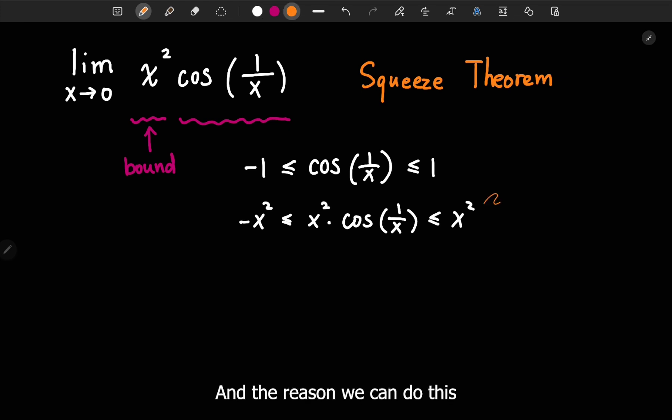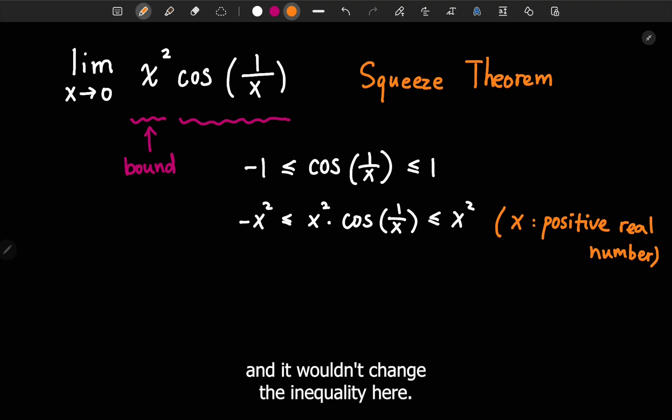And the reason we can do this is that, as we know, x goes to 0. x is a very small number, but our x is still a positive real number. Therefore, we can times x to this function, and it wouldn't change the inequality here.